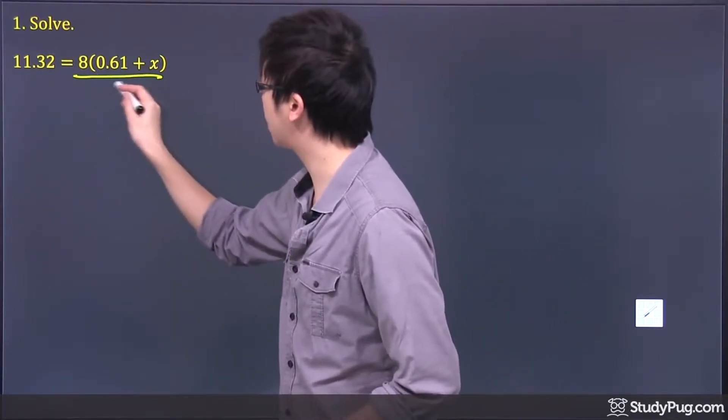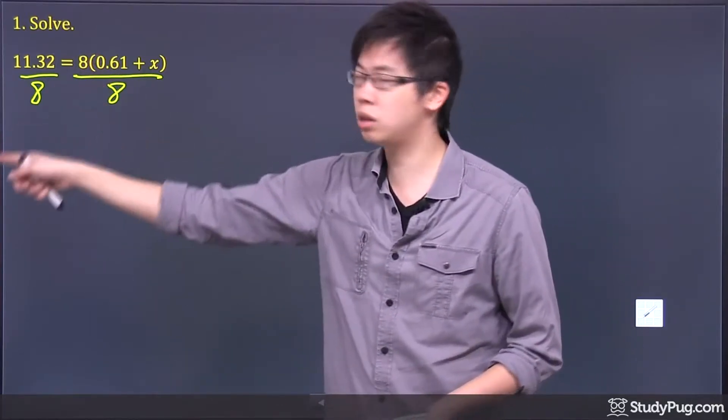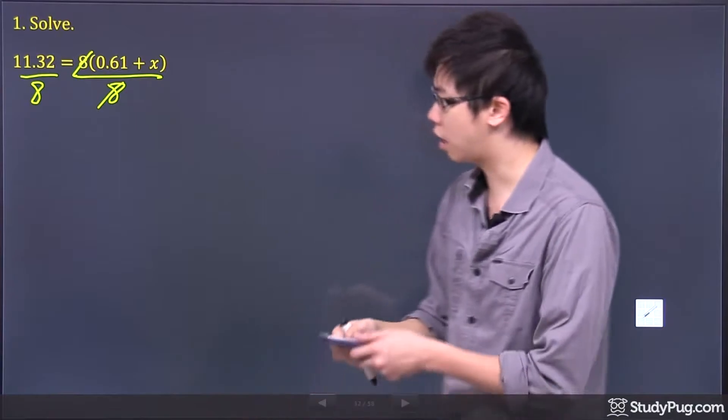What I want to do first is divide by 8 on both sides, or you can think about cross-multiplying, just times 8 to the bottom. Same thing happens. So those 8s get cancelled.